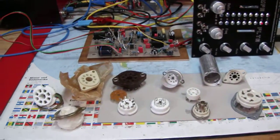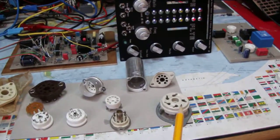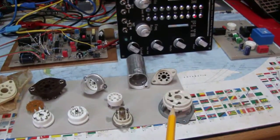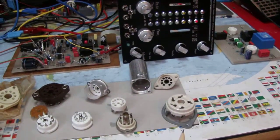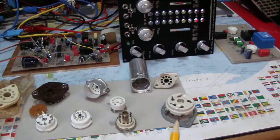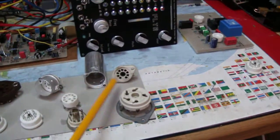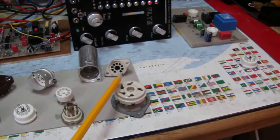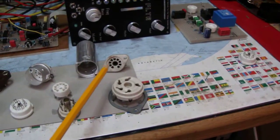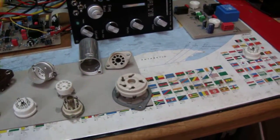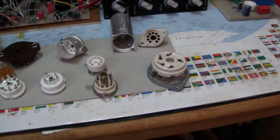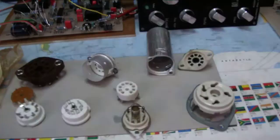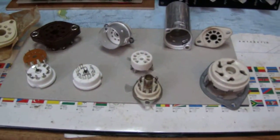Here we go. This is a very old one for 807 transmitting tubes, five pins. This one is old, which I desoldered from some junk, and this is a new one which I normally use on printed circuit boards.